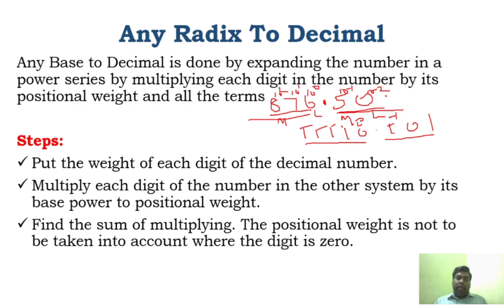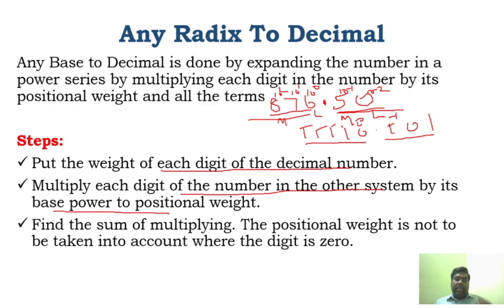So you have to look at each digit and the corresponding power can be multiplied. Put the weight of each digit and multiply each digit of the number in the other system by its base power — the positional weight. Then you have to find the sum of all the multiplications and add all the things together. The positional weight is not to be taken into account where the digit is 0.